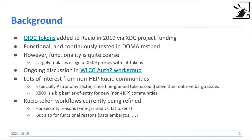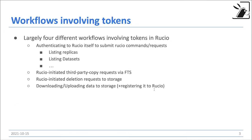The two things we want to improve with these token workflows are: for security reasons, we want to go to fine-grained tokens instead of FAT tokens; and for data embargoes — so also for functional reasons — potentially for new communities, not for WLCG, but potentially for others.